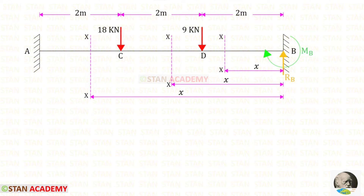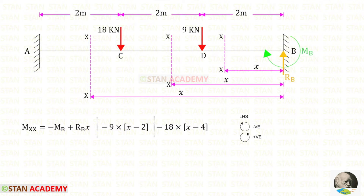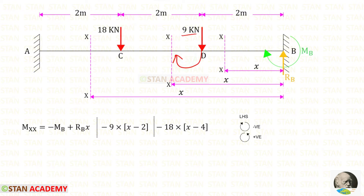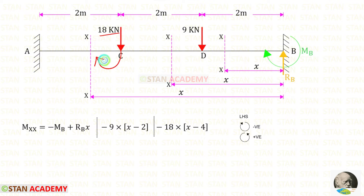You can see that I have made three sections: one in AC, one in CD, and one in DB. I have made all of the sections at a distance of X from point B. Now let us find the moments about the sections, moving from point B towards the left-hand side. Clockwise will be negative and anti-clockwise will be positive. MB is acting clockwise so it is negative. RB is acting anti-clockwise so it is positive with distance X. The load 9 kN acts clockwise so it is negative, with distance X minus 2. The load 18 kN also acts clockwise so it is negative, with distance X minus 4.